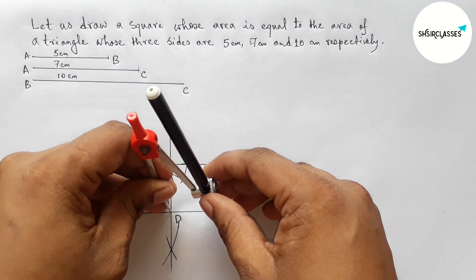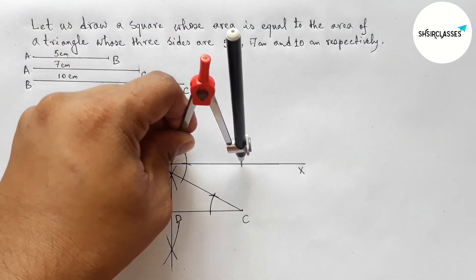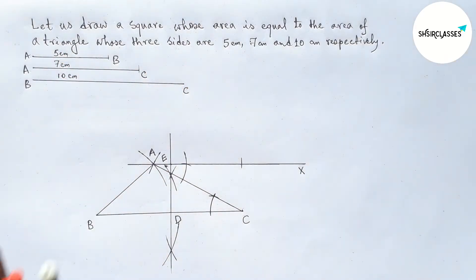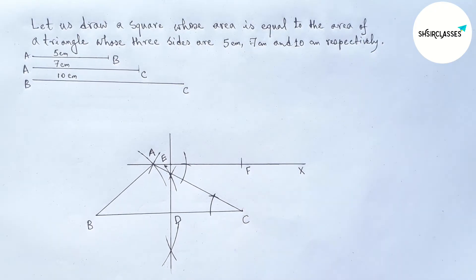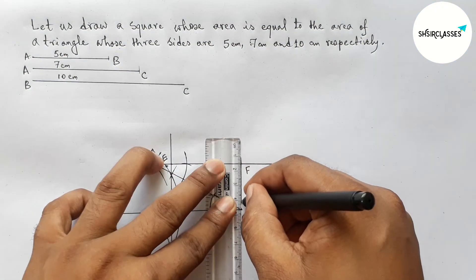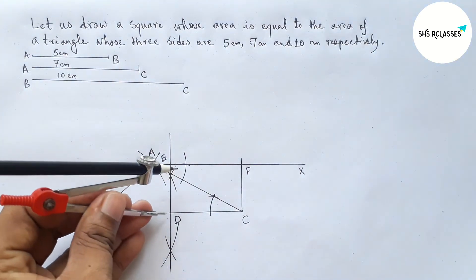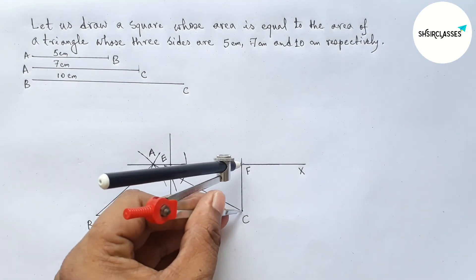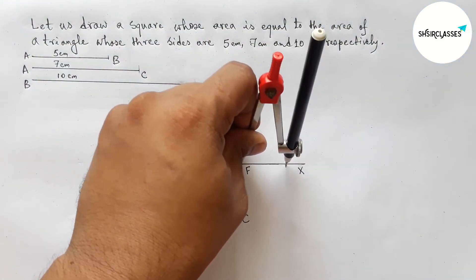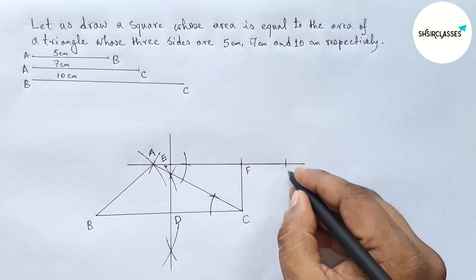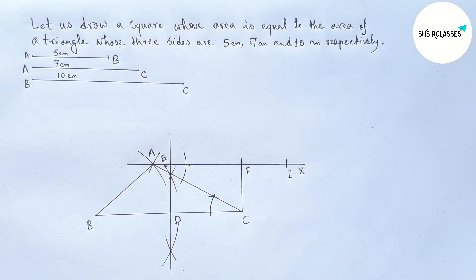Now taking DC with the compass, putting the compass on point E and cutting here, taking that point as F. Joining C and F. DE and CE are both equal. Then putting the compass on point F and cutting the line AX here, taking that point as I.